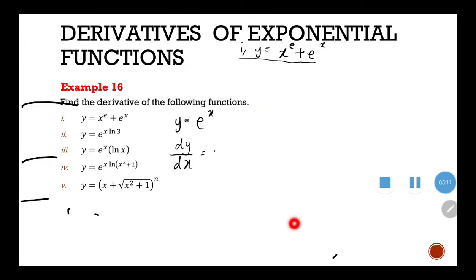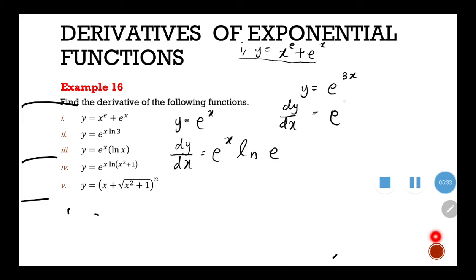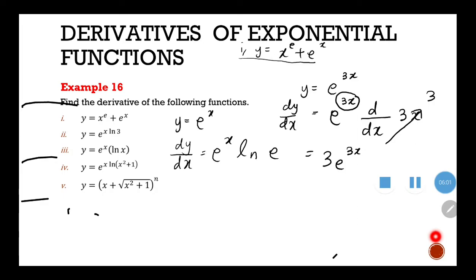For y = e^x, the derivative is e^x · ln(e). Now we have y = e^(3x). The dy/dx for this: write back e^(3x), then multiply by the derivative of 3x. The derivative of 3x is 3, so the final answer is 3e^(3x).